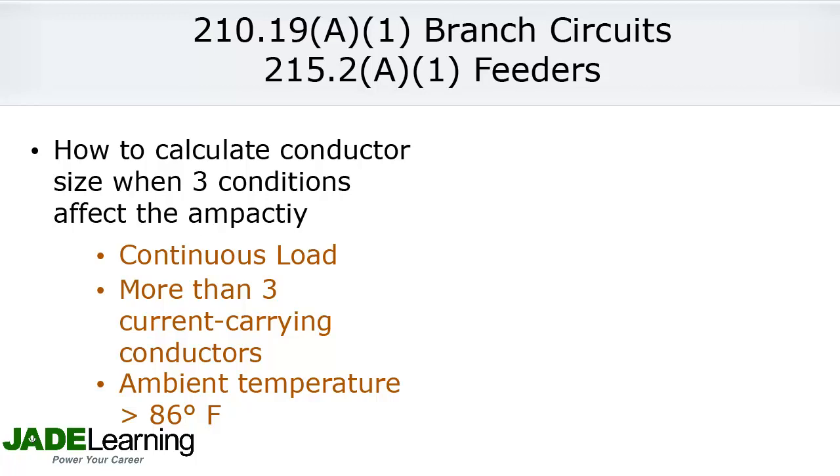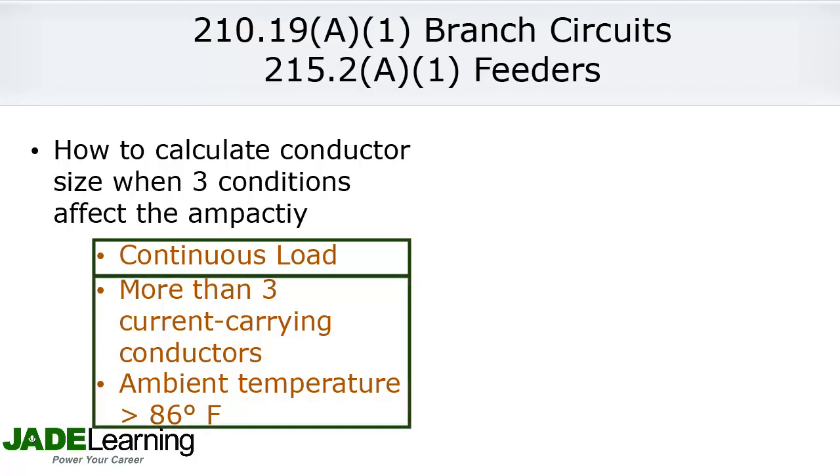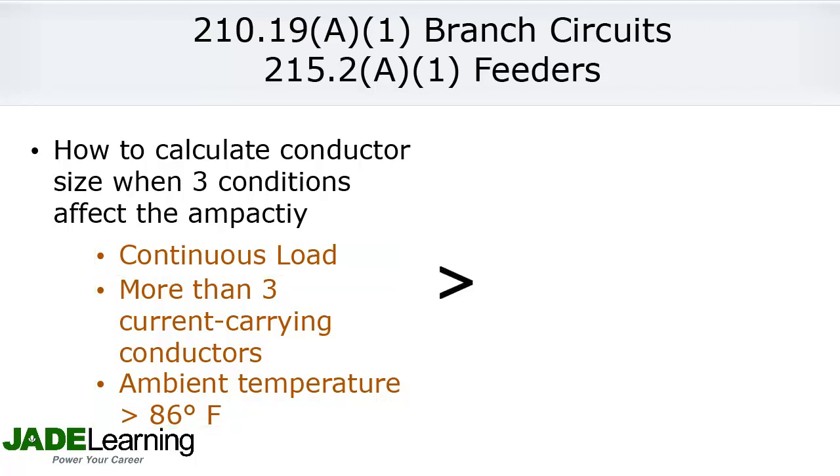The 2014 NEC says that we compare the size of the wire we get for the continuous load on the one hand with the size of the conductor to allow for more than three current-carrying conductors in conduit and an ambient temperature greater than 86 degrees Fahrenheit on the other hand, and we select the larger of the two sizes.